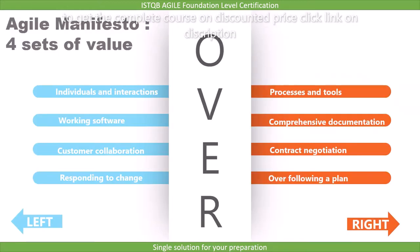To summarize, the four Agile Manifesto values are: Individuals and interactions over processes and tools; Working software over comprehensive documentation; Customer collaboration over contract negotiation; and Responding to change over following a plan. Remember all four, as they are very important for the exam.